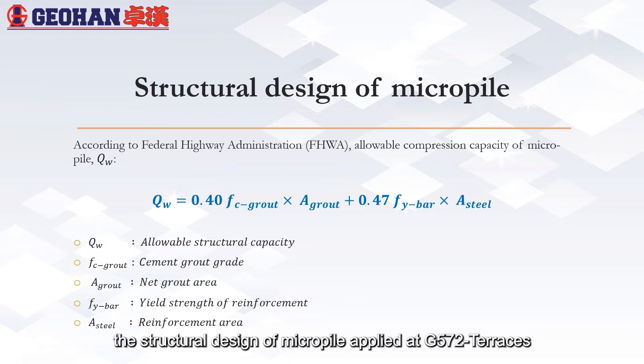The structural design of MicroPile applied at G572 terraces is referring to Federal Highway Administration. It is to ensure the pile is able to withstand the acting load on it. The allowable compression capacity of MicroPile is equal to sum of 0.4 cement grout grade times net grout area and product of 0.47 yield strength of reinforcement and area of steel.